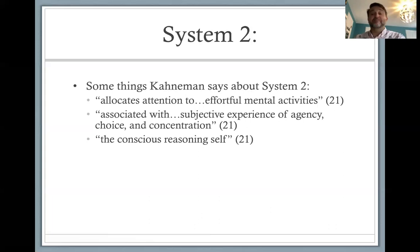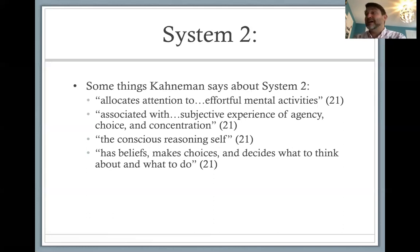We can also talk about system two as the conscious reasoning self — a system that has beliefs, makes choices, and decides what to think about and what to do. It can also construct thoughts in an orderly series. What Kahneman is getting at is that there can be some kind of concatenation between different thoughts in system two.